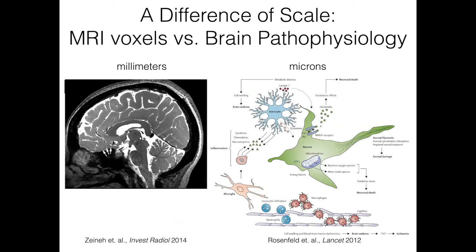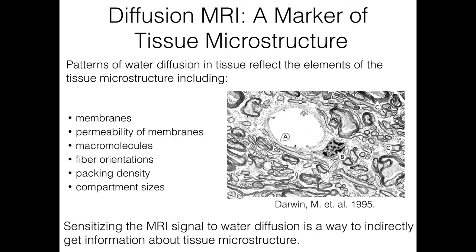Diffusion MRI is a particularly powerful imaging modality because it lets us infer on tissue components at a microscopic level well below achievable image resolution. It's often at this microscopic level that early-stage disease manifests itself, and that's a really powerful thing to be able to detect. The general concept is that patterns of water diffusion in tissue reflect elements of tissue microstructure.